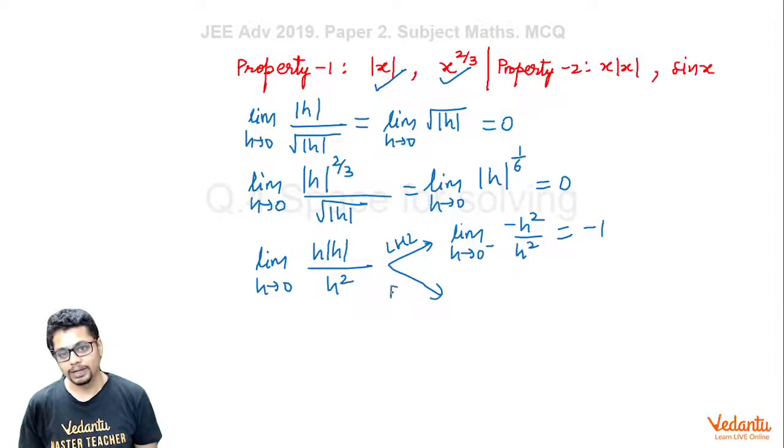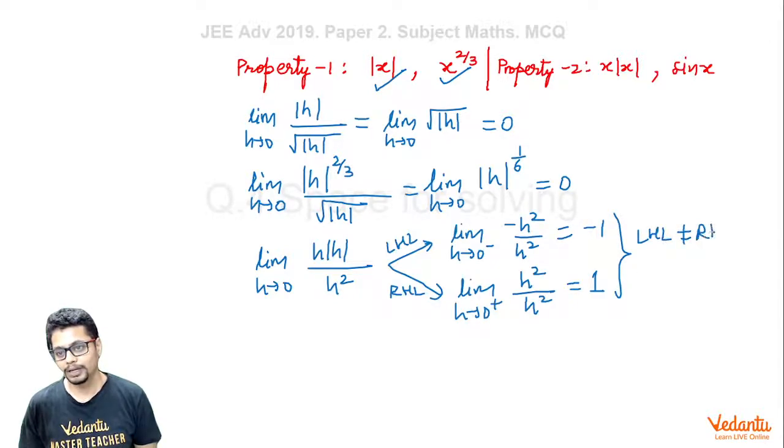For the right-hand limit: lim(h→0⁺) h|h|/h². Since h > 0, |h| = h, so h(h)/h² = h²/h² = 1. Clearly, the left-hand limit (-1) is not equal to the right-hand limit (1). Hence, the limit does not exist, so this function does not have Property 2.